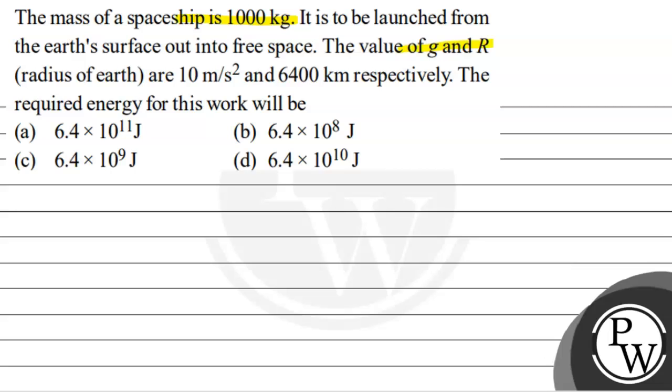The value of g and R, the radius of Earth, is 10 m per second squared and 6400 km respectively. So, acceleration due to gravity value is 10 m per second squared and the radius of the Earth is 6400 km.